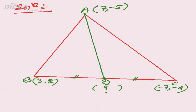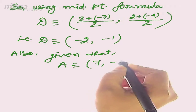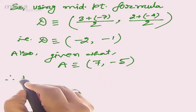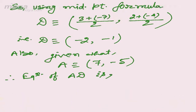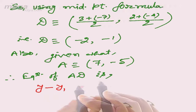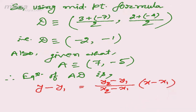Now we know the coordinate of D(-2, -1) and the coordinate of A(7, -5). The equation of AD passes through two points A and D, so we will use the two-points form: y - y₁ = [(y₂ - y₁)/(x₂ - x₁)] × (x - x₁).